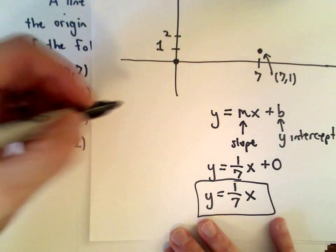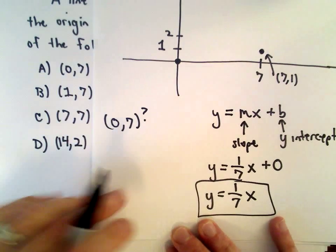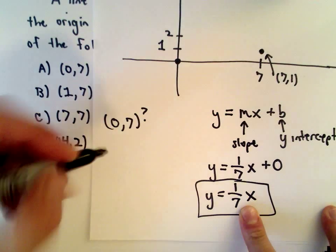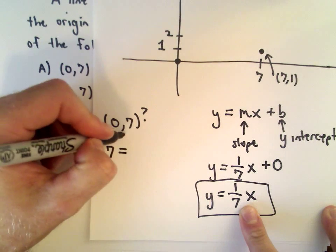For example, I could ask myself: does answer choice A, (0,7), work? If I put 0 in for x and 7 in for y, I would ask myself does 7 equal (1/7) multiplied by 0?